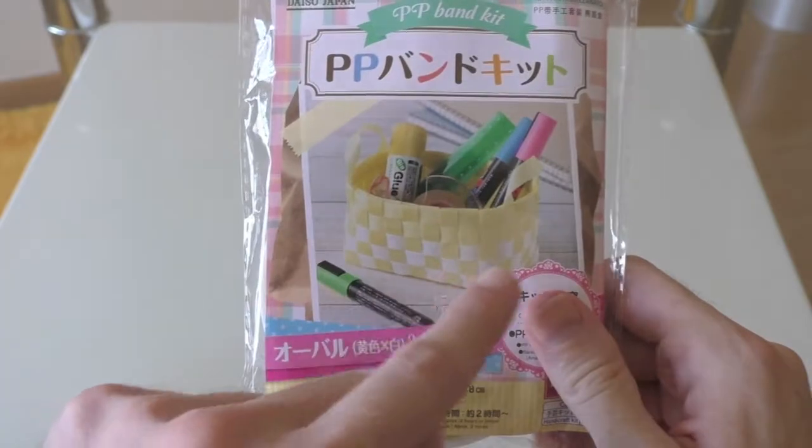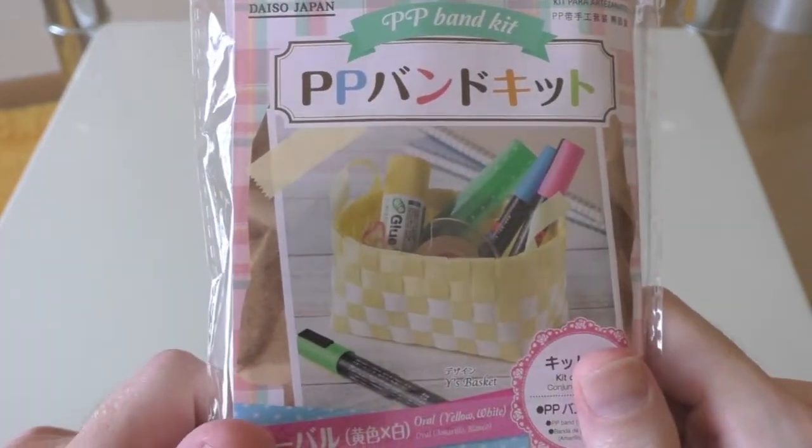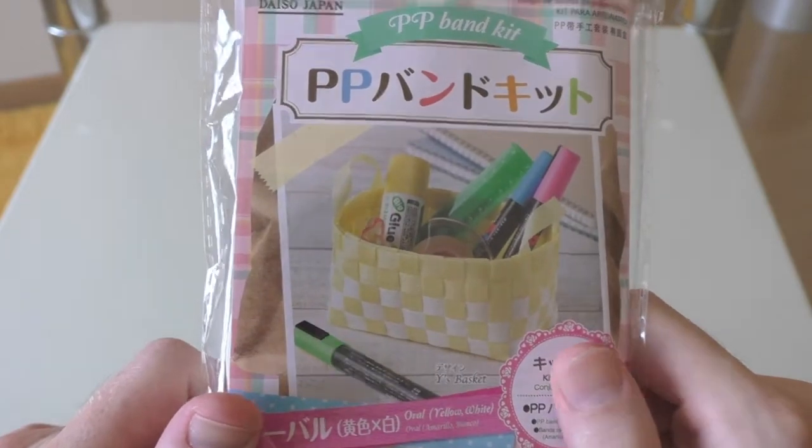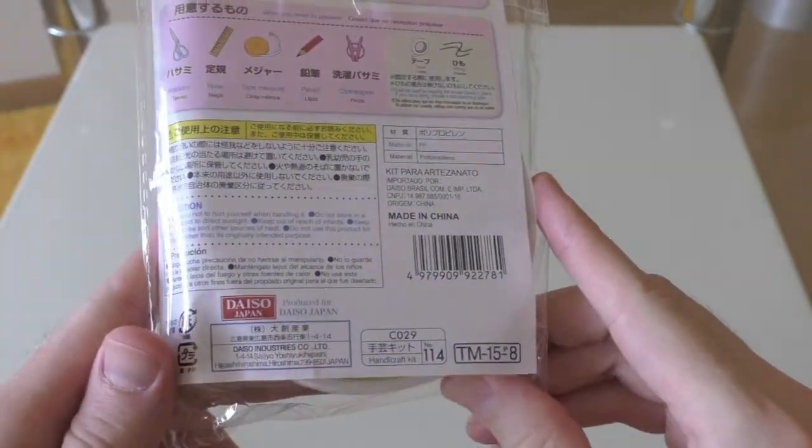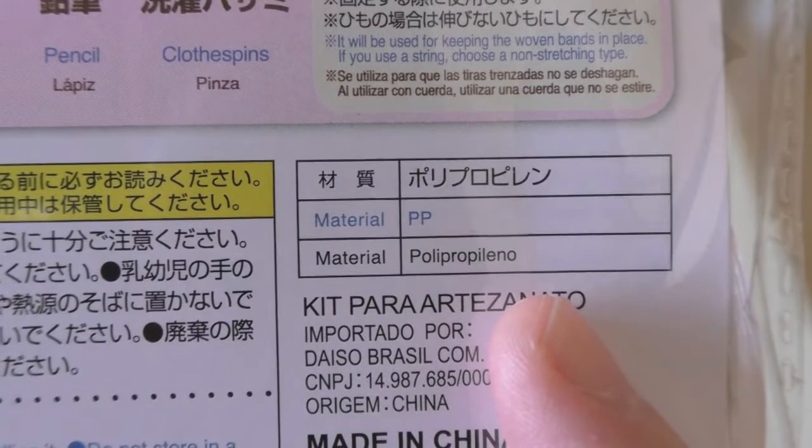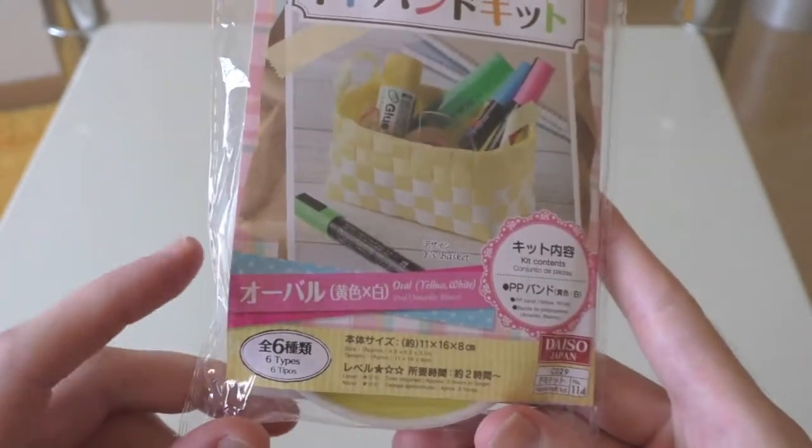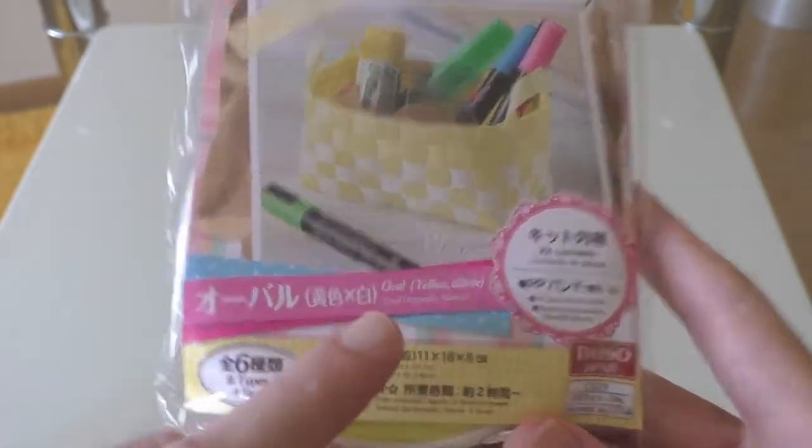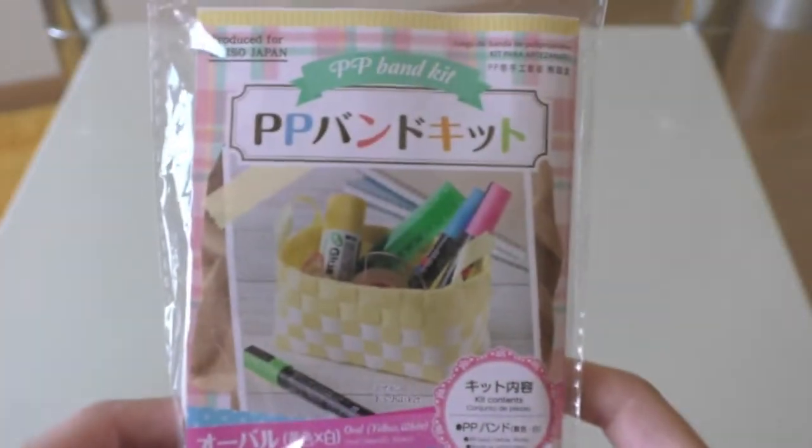As I was searching the other day through Daiso for some storage containers and came across this, the PP band kit. As you can see from the picture, it's some sort of weaving kit to make a small basket type thing. PP - polypropylene, I guess that's a type of plastic. This is in a series of six and this is the oval yellow white.